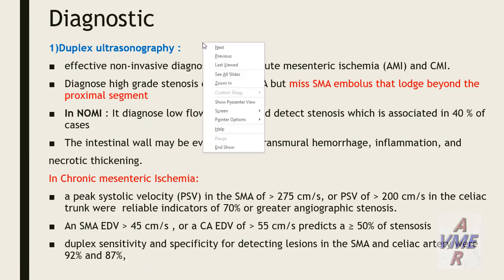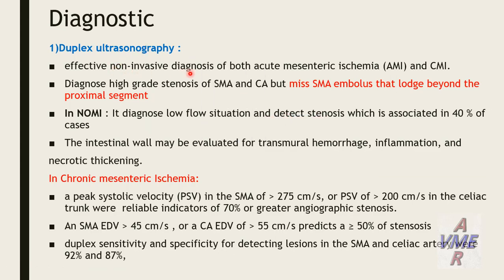Diagnostic duplex ultrasonography is an effective non-invasive diagnostic tool for both acute and chronic mesenteric ischemia. It can diagnose high-grade stenosis of the superior mesenteric artery and celiac trunk. In non-occlusive mesenteric ischemia, it is diagnosed with low flow situations and index stenosis, which is associated in 40% of cases. The intestinal wall may be evaluated for transmural hemorrhage, inflammation, and necrosis.